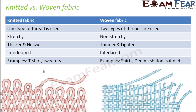We will have a comparison between knitted versus woven fabric. When we talk about knitted fabric, one type of thread is used, whereas in woven fabric, two types of threads are used. Just look at this picture — here you have one type of thread which is horizontal, and the other threads that are vertical are the other type. In woven, you have two types of threads, but in knitted you just have one type of thread, which interlaces with itself, and that's how you get the knitted fabric.